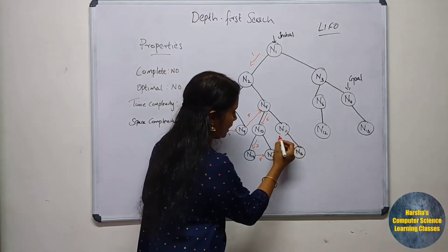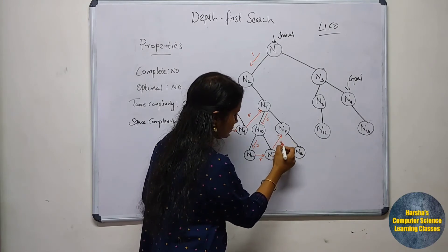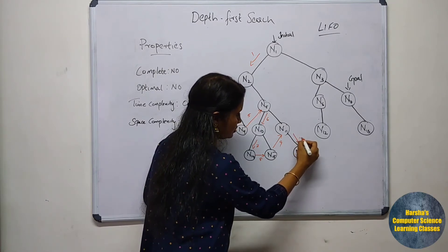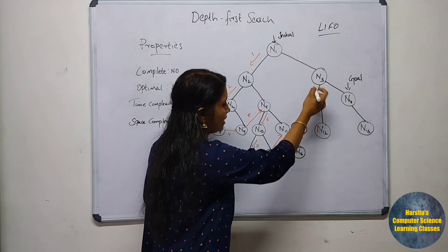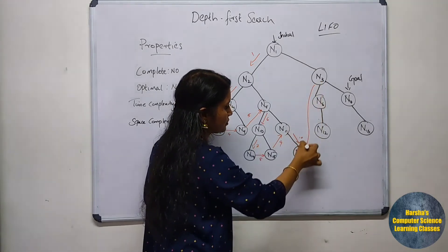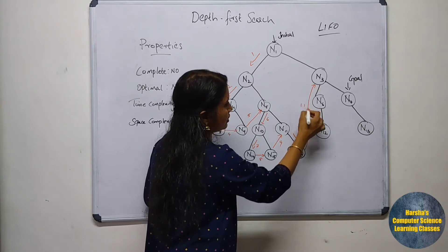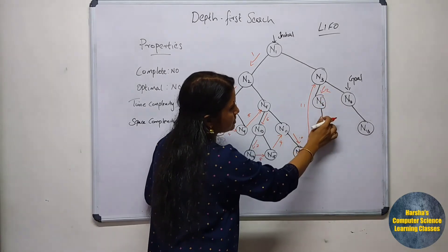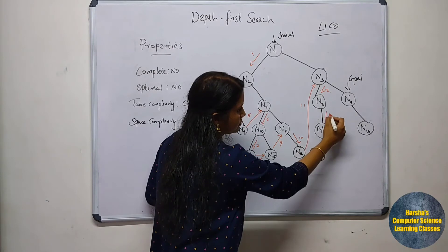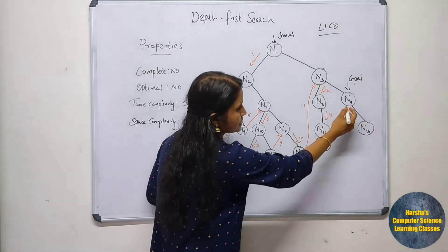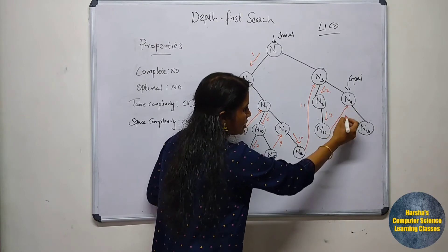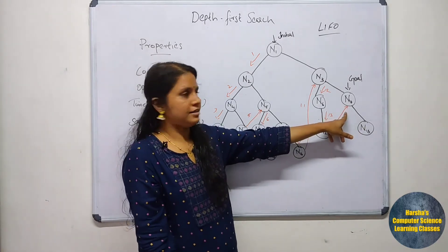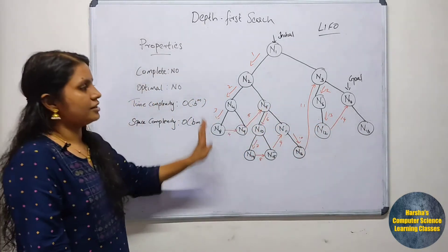From N15 we move to N11, from N11 we move to N16, from N16 we move to N3, and from N3 we explore N6. Then from N6 we visit N12, and from N12 we reach N7 — the goal node. In this way DFS works.